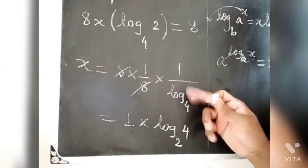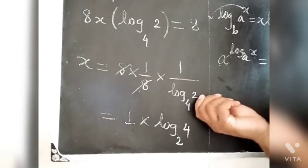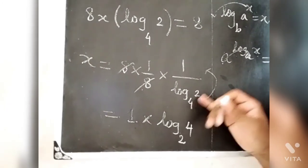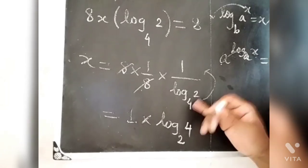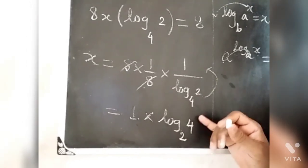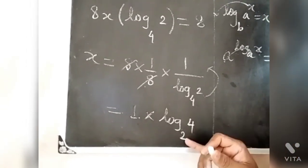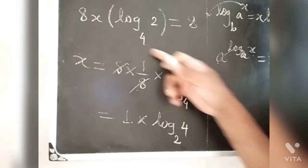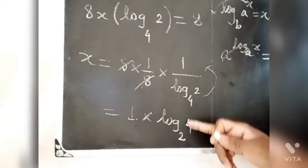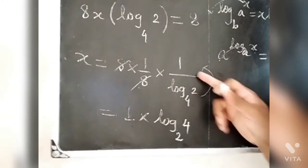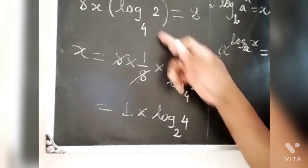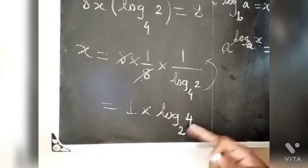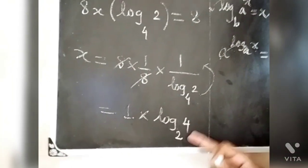Now we'll check it with 1x. Then we'll check it with base 4. Then log 4 base 2. This focuses on the other side. If you choose to use it, you can find the answer right now. Everyone is a reciprocal. What is the reciprocal? The reciprocal is the same — log base is reciprocal.